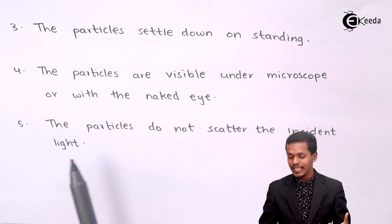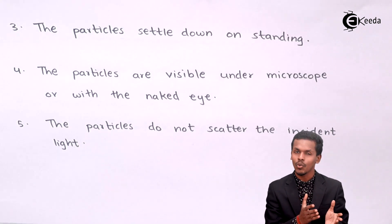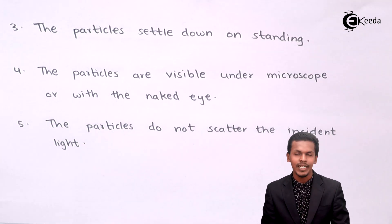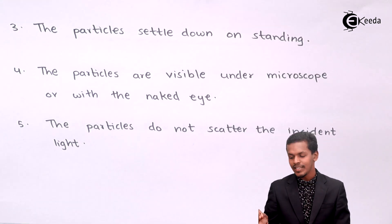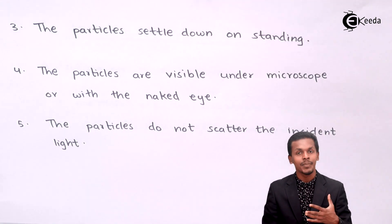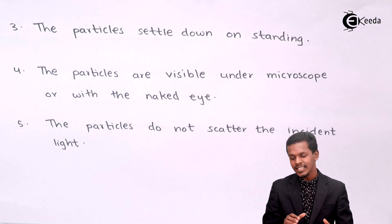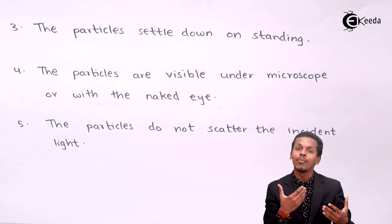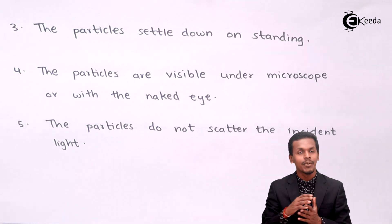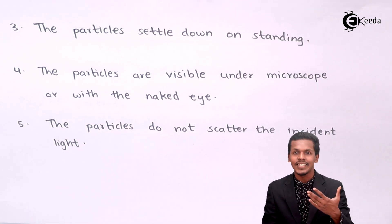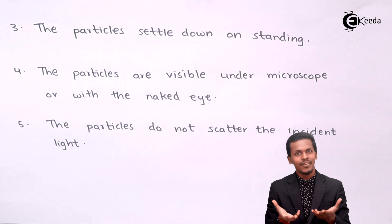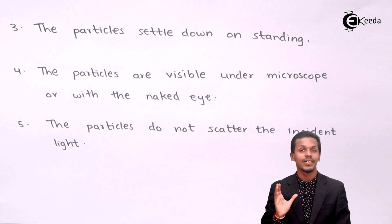The next property is that the particles do not scatter incident light. This is similar to true solutions. Colloidal particles, having a size from 1 to 10³ nanometers, do scatter light. But suspension particles are much larger, so they do not scatter light — instead they block it. In a true solution, incident light passes straight through without any scattering.